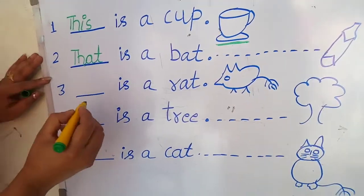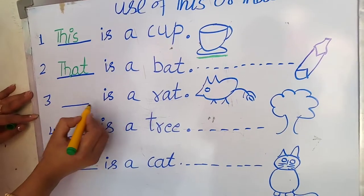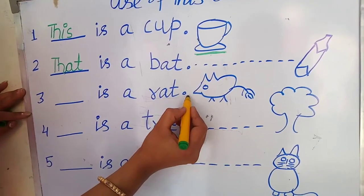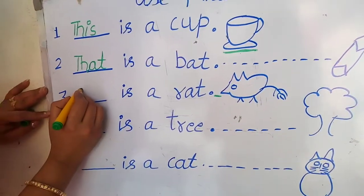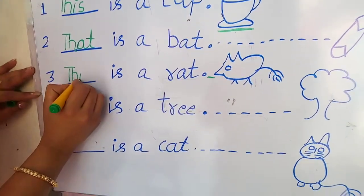Now you can see dash is a rat. Rat is close to me or far away? Close. So write down this. This. Very good.